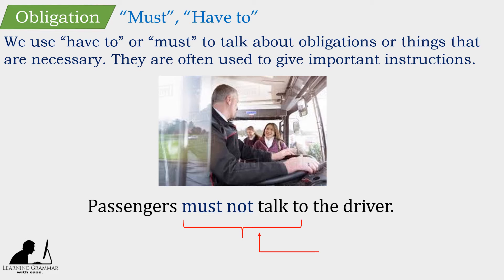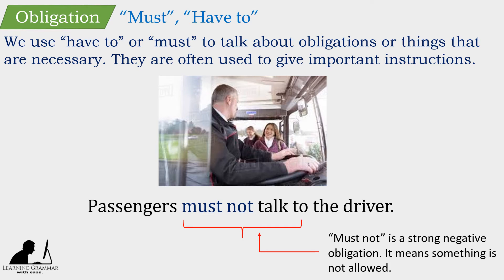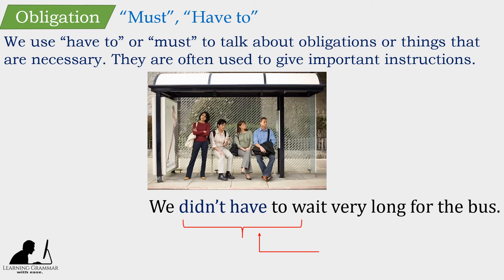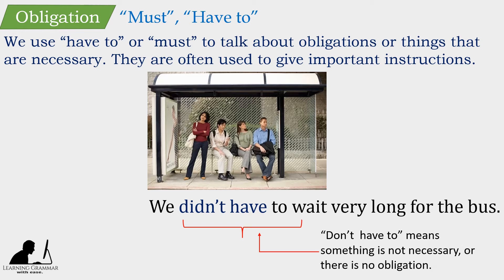Passengers must not talk to the driver. 'Must not' is a strong negative obligation — it means something is not allowed. We didn't have to wait very long for the bus. 'Don't have to' means something is not necessary, or there is no obligation.